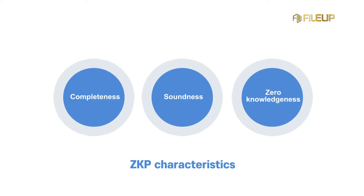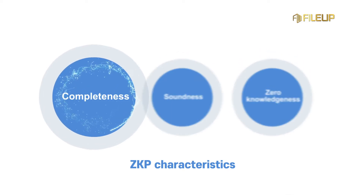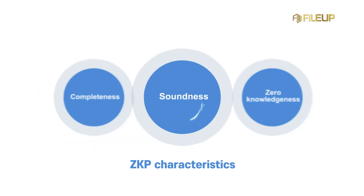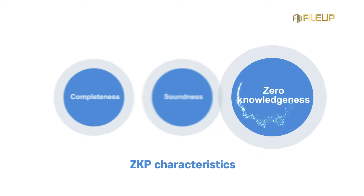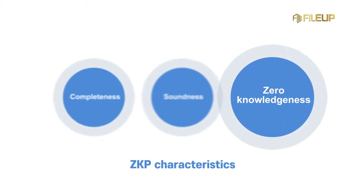The three fundamental characteristics that define a zero knowledge proof include completeness, soundness, and zero knowledge. If a statement is true, then an honest verifier can be convinced by an honest prover that they possess knowledge about the correct input. If a statement is false, then no dishonest prover can convince an honest verifier that they possess the correct input. If the statement is true, then the verifier learns nothing more from the prover other than that the statement is true.